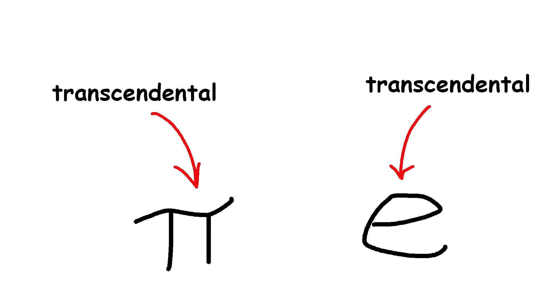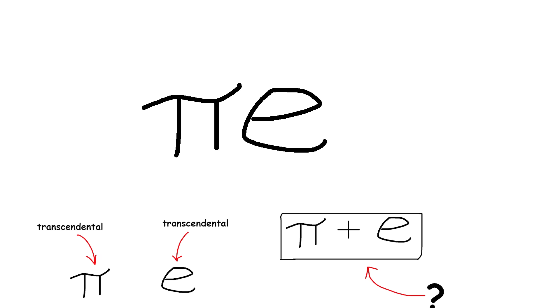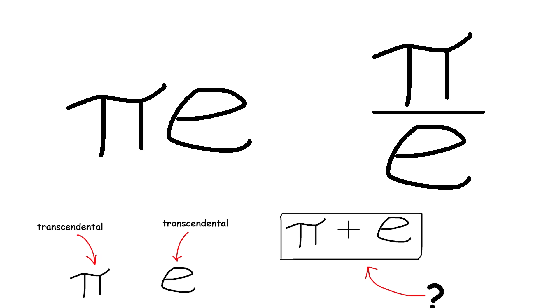Well, we do know that both pi and e are transcendental. But somehow it's unknown whether pi plus e is algebraic or transcendental. Similarly, we don't know about pi times e, pi over e, and other simple combinations of them. So there are incredibly basic questions about numbers we've known for millennia that still remain mysterious.